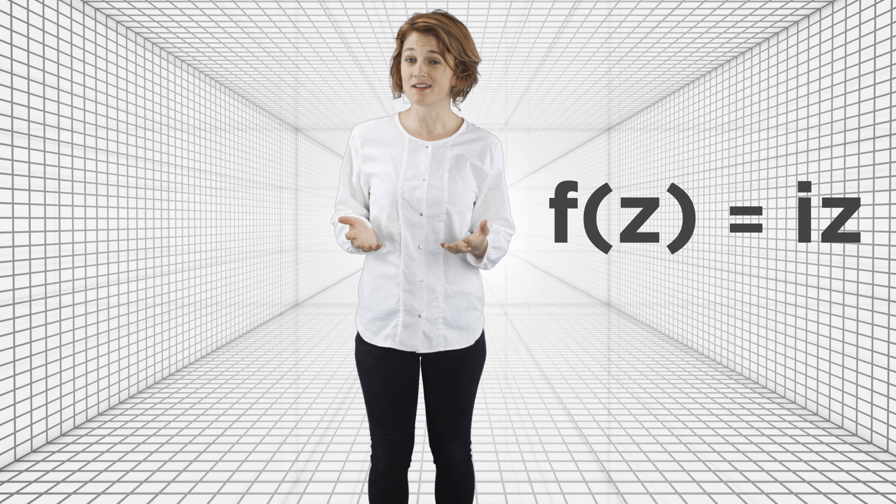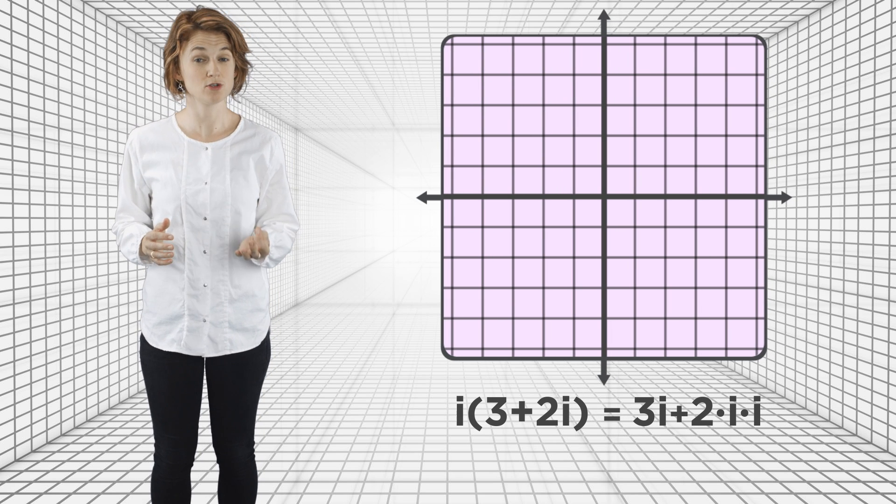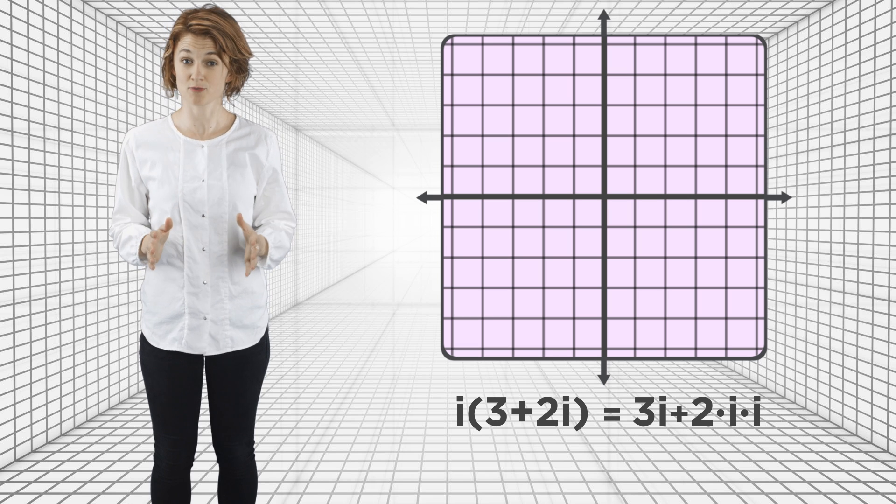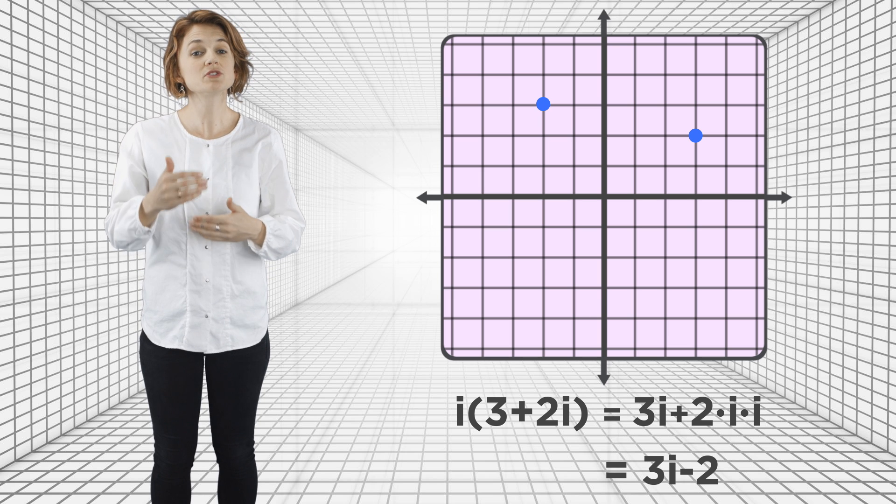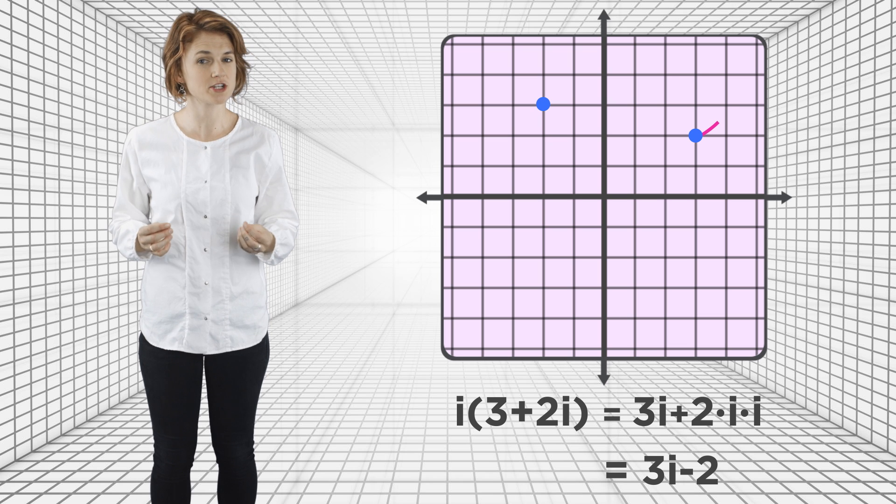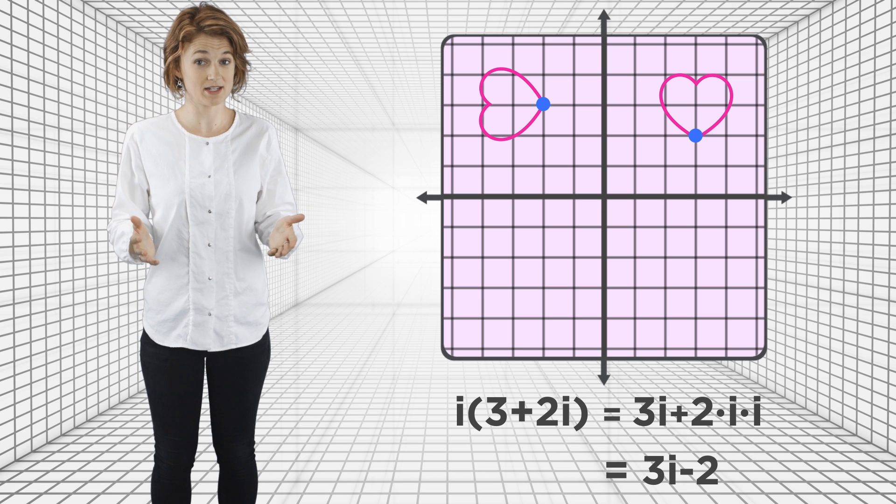There is a linkage which takes any point z and multiplies it by the imaginary unit i. What's so cool about that? Well, multiplication by i rotates a point 90 degrees counterclockwise. Here's an example. i times 3 plus 2i is 3i plus 2 times i times i, since we just distribute the i like normal multiplication. And that's 3i minus 2, since i times i is negative 1. So if you use the linkage associated with the function i times z and trace the input vertex along a shape, it'll output the point in the shape multiplied by i, which is exactly the shape rotated 90 degrees.